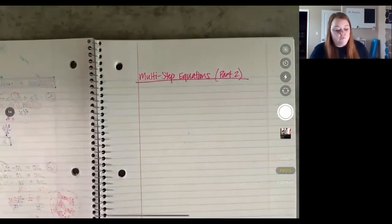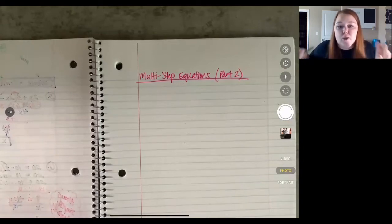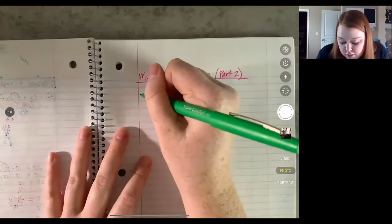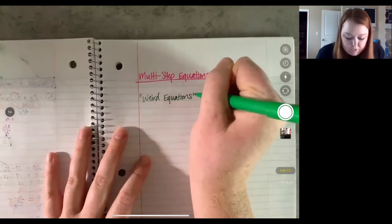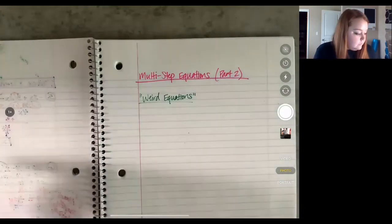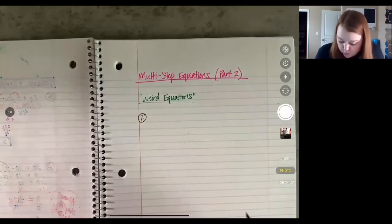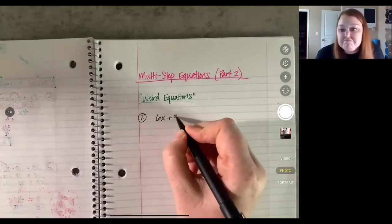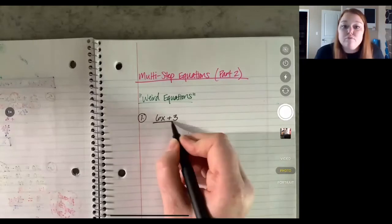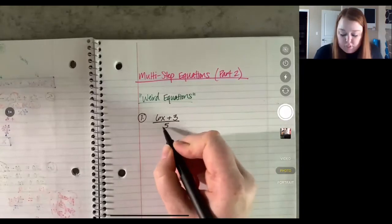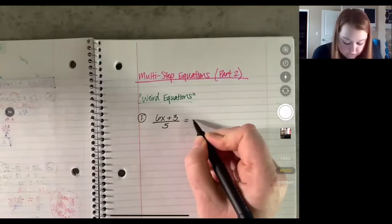Typically when I go over these sorts of equations in class, I usually call them weird equations just because I don't have a better word for it. Let me show you what I mean by weird. Here's your first example: we've got six x plus three — that looks normal so far — but we're going to put a big fraction bar, making it six x plus three divided by five, and set that equal to negative nine.